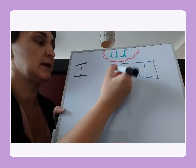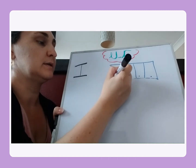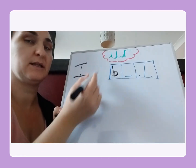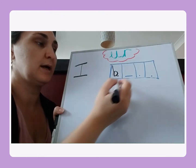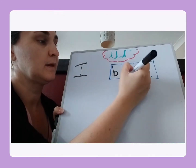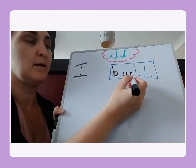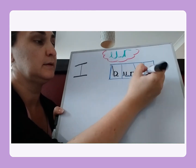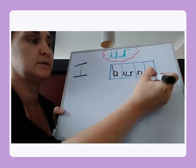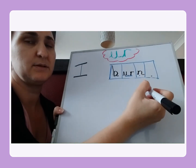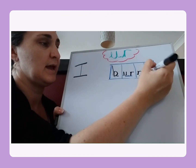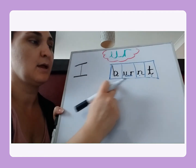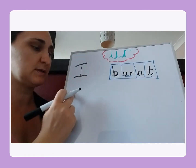So what's the first sound? Buh — brilliant. Buh, ur. Now we know how to write the ur digraph: u and r. Buh, ur, nnt. Can you hear that last sound? It's a t — excellent. Now let's just check: buh, urnt — burnt. I burnt my. 'My' is a tricky word: M, Y — a word we just need to know.